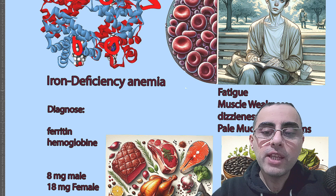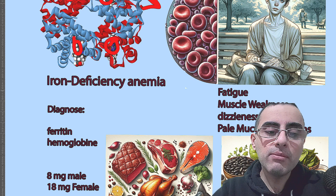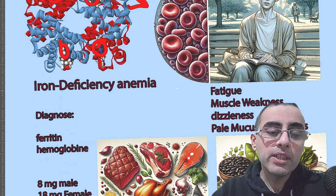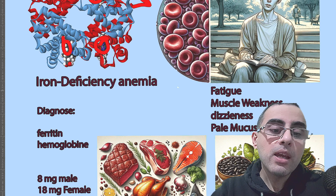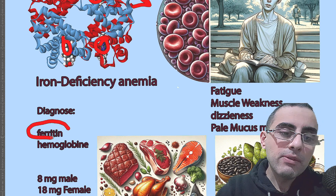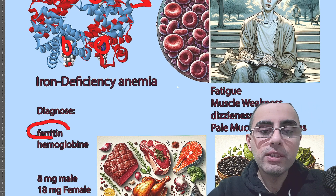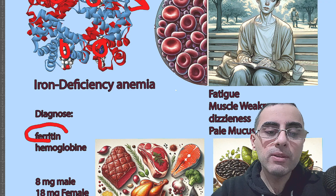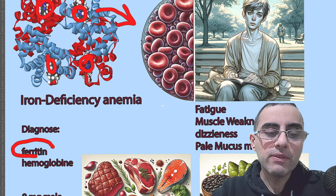To diagnose iron deficiency anemia, we need the hemoglobin level and the ferritin level. When the ferritin level is low, it means that the person has iron deficiency.